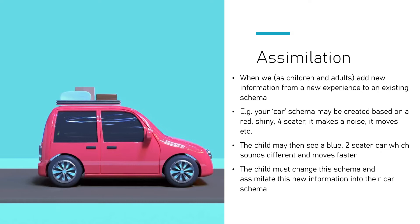This is the Piaget terminology you need to know — assimilation is when we change a schema to take into account new information. We all do it with things like holidays: you might have gone on UK holidays, and then your holiday schema develops and gets more complex, and if you start going abroad, you assimilate that information, whether as children or adults.